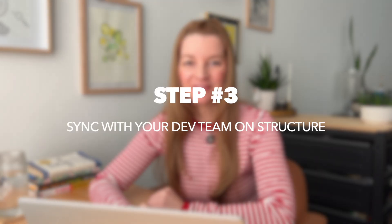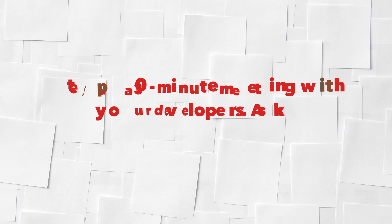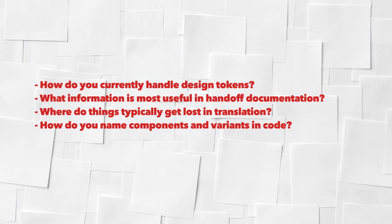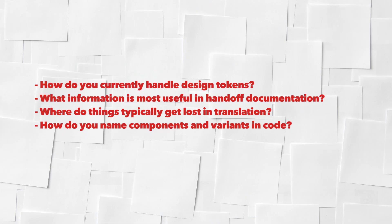Step three: sync with your dev team on the structure. Set up a 30-minute meeting with your developers and ask: how do you currently handle design tokens? What information is most useful in handoff documentation? Where do things typically get lost in translation? How do you name components and variants in code? Your goal is alignment — because when MCP starts translating between design words and dev words, you both need to share the same mental model.